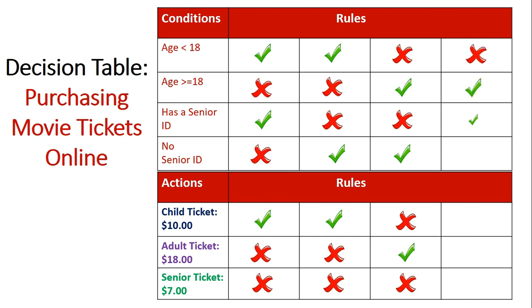In the final column, they are greater than or equal to 18 and they do have a senior ID card, which they can enter into the cinema system. They'll be awarded a senior citizens ticket of $7.